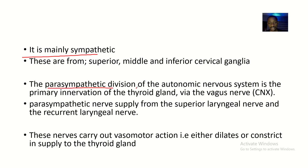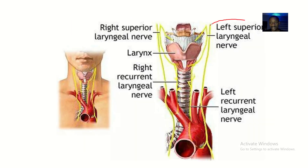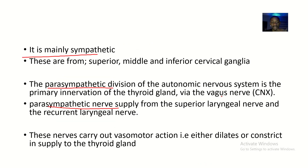The parasympathetic division of the autonomic nervous system also supplies the thyroid gland, via the vagus nerve — specifically from branches of the vagus nerve. The parasympathetic innervation comes from the superior laryngeal nerve and the recurrent laryngeal nerve, because both the superior laryngeal nerve and the recurrent laryngeal nerve are branches of the vagus nerve.